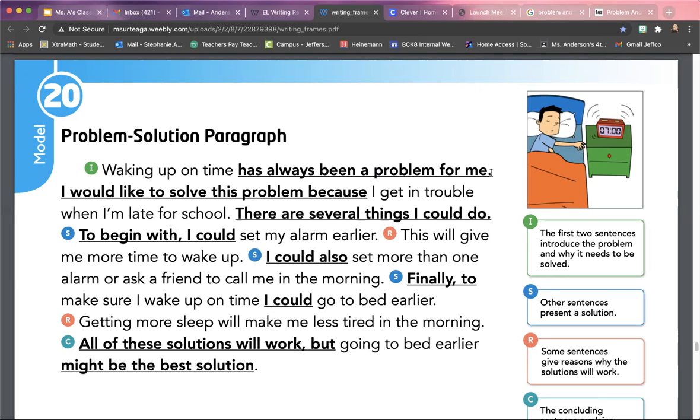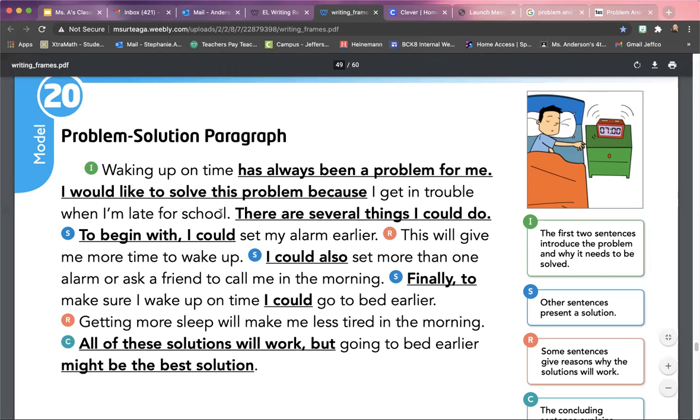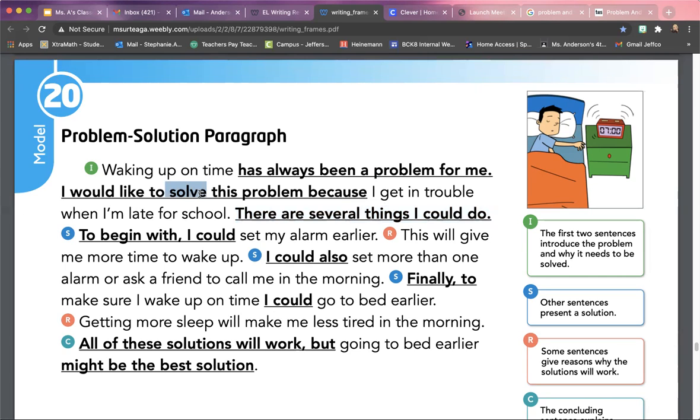So he has a problem, and then he comes in here - there are several things I could do. So it's a little tricky in this second sentence using the word solve. So I feel like your brain's gonna go, 'ooh this is our solution.' That's not our solution yet. We have our problem, why he wants to solve it. Then there are several things I could do. He doesn't just give one way to solve this problem, he gives multiple.